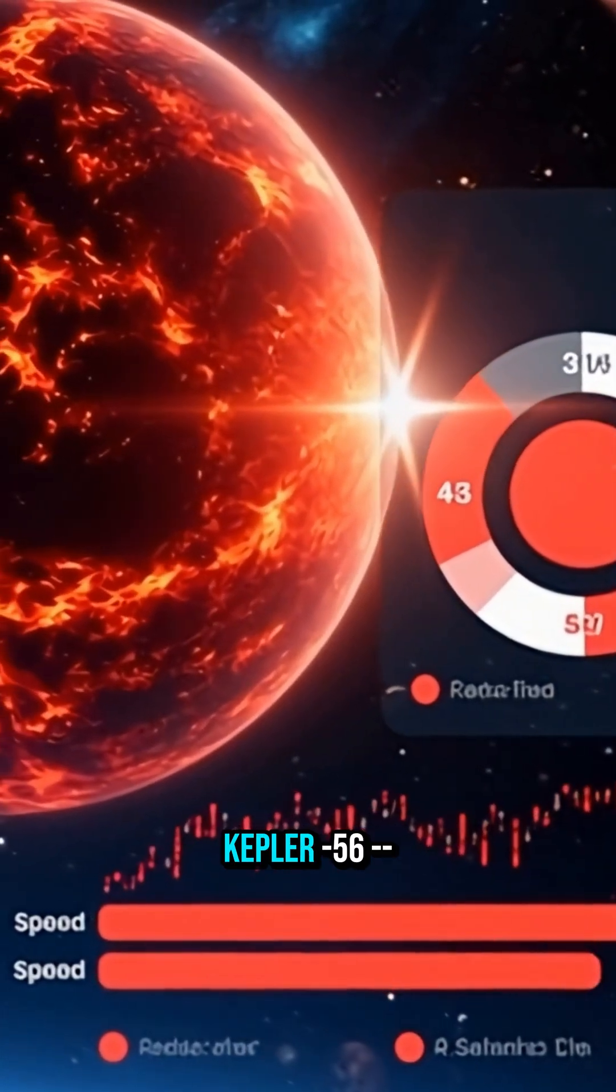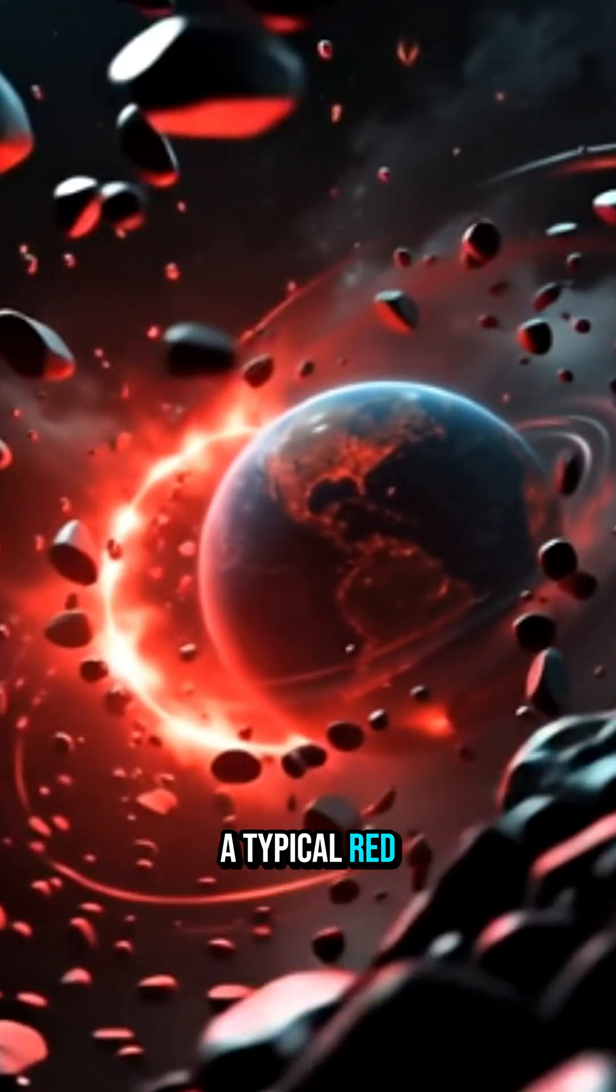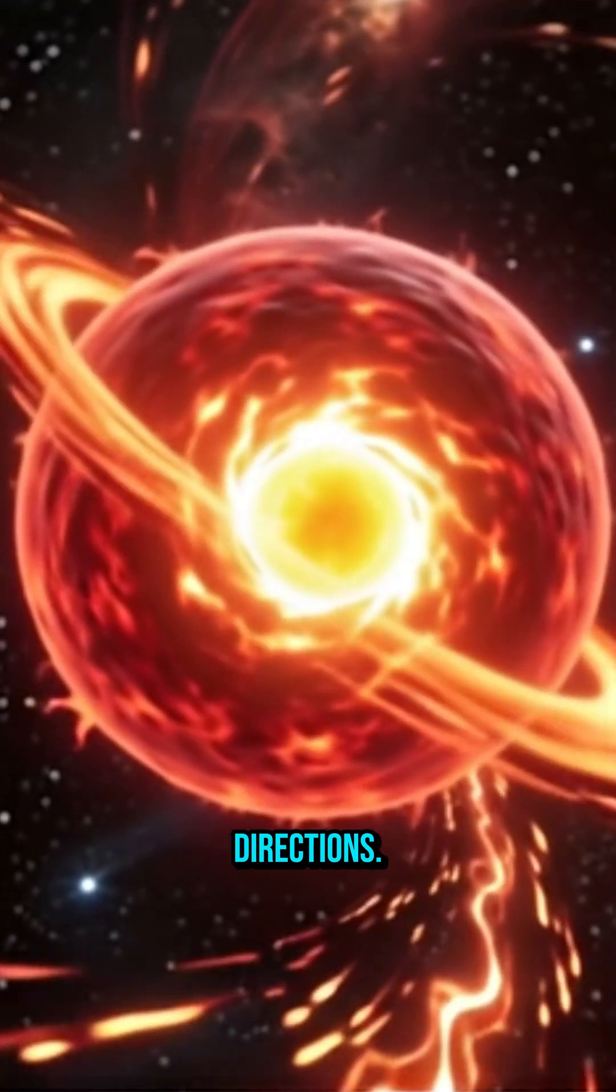The star, called Kepler-56, spins nearly 10 times faster than a typical red giant. Even stranger, its core and outer layers rotate in different directions.